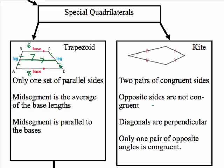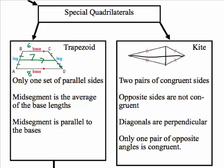For kites, kites have two pairs of consecutive congruent sides. The opposite sides are not congruent — a side will not be congruent to the side opposite it. The diagonals are perpendicular, so if we draw the diagonals they will intersect each other at a right angle. And only one pair of opposite angles is congruent.